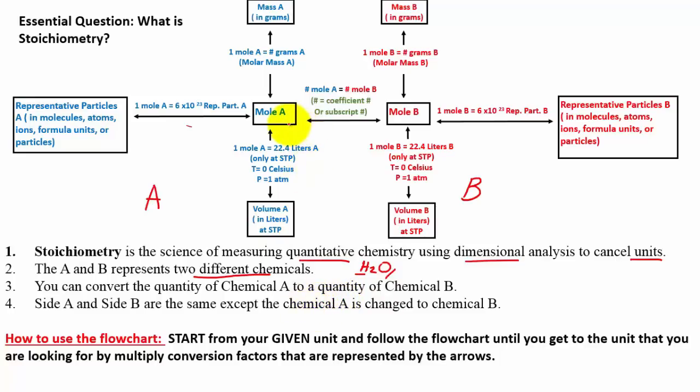Now, because A and B are on the same flowchart, you can convert the quantity of A to a quantity of chemical B.